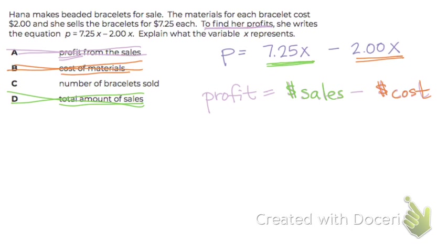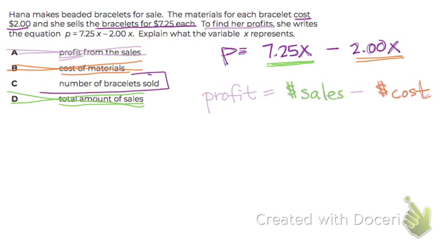I think the answer is C, but let's see if that makes sense. Does X represent the number of bracelets sold? Profit equals $7.25 — the price you're selling the bracelets for — times the number of bracelets sold, minus $2 — the cost for the materials to make your bracelet — times the number of bracelets sold. That makes sense. So the answer is C.